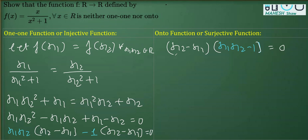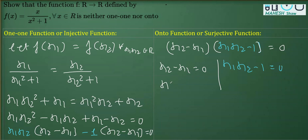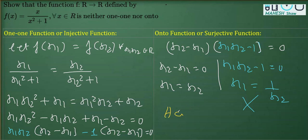Equating each factor to zero: either x₂ - x₁ = 0, giving x₁ = x₂, or x₁x₂ - 1 = 0, giving x₁ = 1/x₂ (x₁ as reciprocal of x₂). Because we are not always getting x₁ = x₂, hence the function is not one-one.